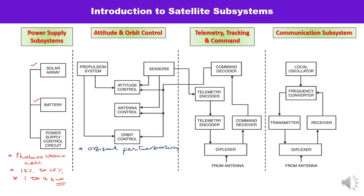The parts of the attitude and orbit control system are: propulsion system, sensors, attitude control, antenna control, and orbit control. For attitude control, two types of sensors are used — Earth sensor and Sun sensor — and a pair of Earth and Sun sensors are used together. The propulsion system is a reaction control system carried by the satellite in geostationary orbit, and usually there are three kinds of units: low thrust actuators, high thrust motors, and units associated with the space shuttle.